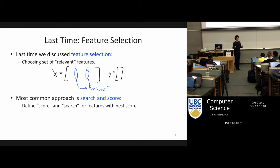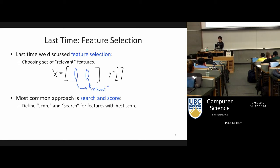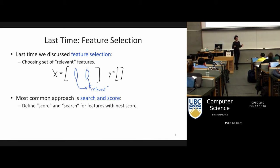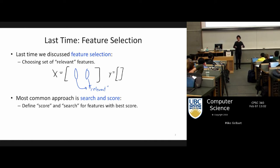So let's take a greedy approach where we'll check of all possible features, just adding one of them, which one is best, then we'll take that one, and then given that one, we'll try all possible second features, see which one is best, and we'll define best in terms of training error. But we will stop when the overall loss doesn't go down anymore, because of this L0 term. So when I added another feature, I had to pay a penalty of lambda, and if my training error didn't go down by lambda, I just wasn't going to add any more features.